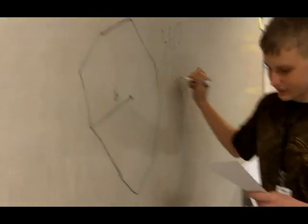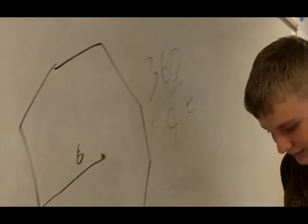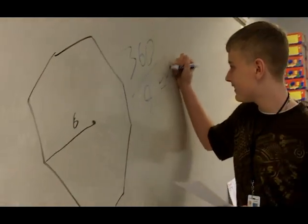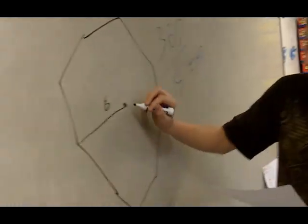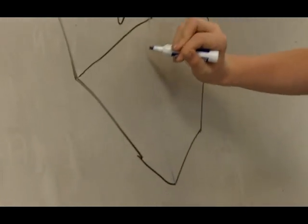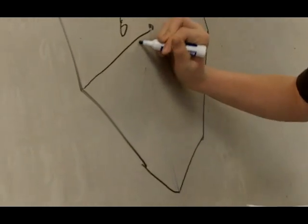360 divided by 9, which will be 40. And then you're going to divide it in half, which will be 20.